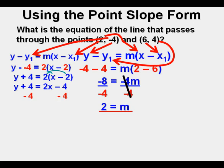The next step is to subtract 4 from both sides of the equation. 4 minus 4 cancel on the left side.